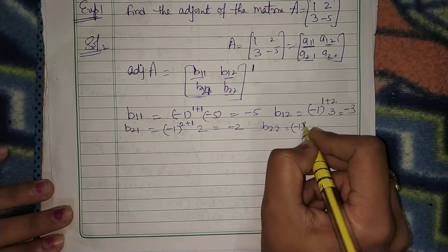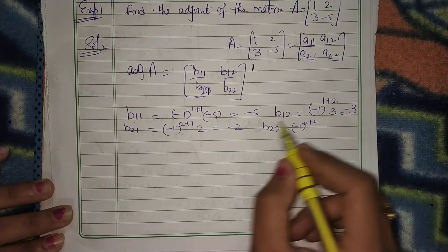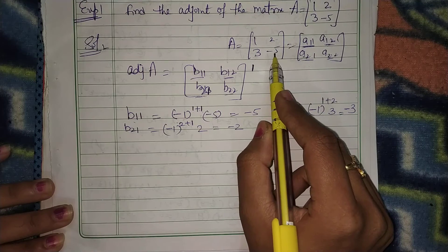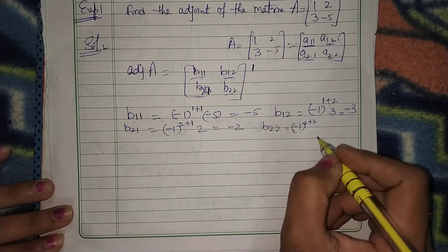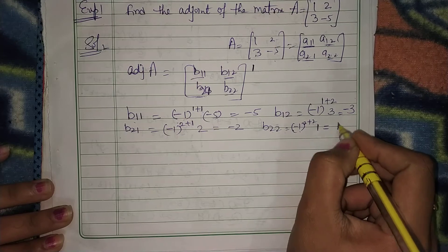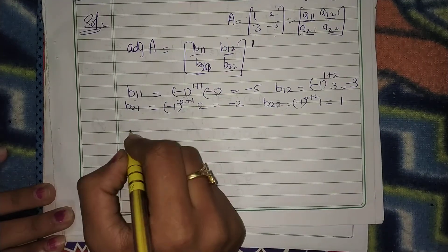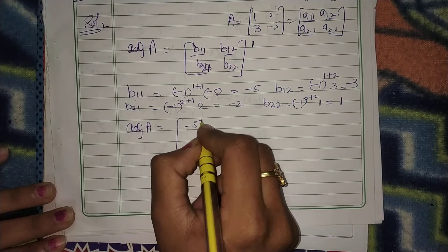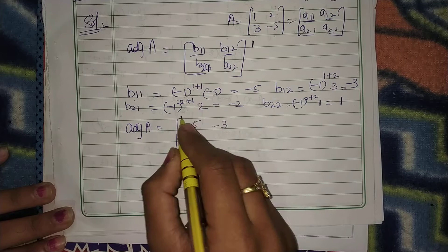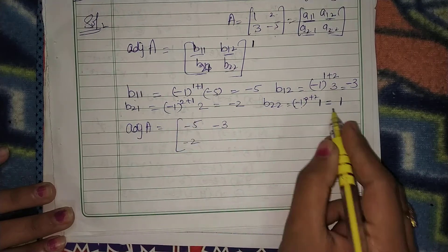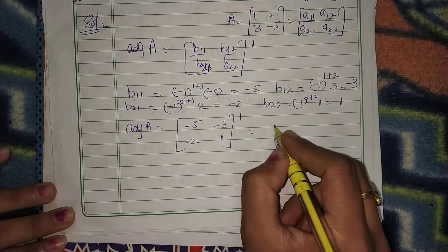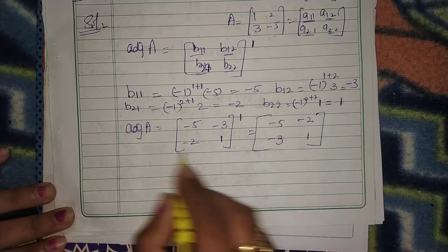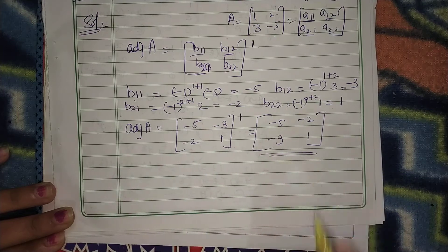B22 is (-1)^(2+2) times the cofactor of A22 — that is the cofactor of -5. The remaining element is 1, so B22 is 1. So what is adjoint of A? Putting all values: B11 is -5, B12 is -3, B21 is -2, B22 is 1. Taking the transpose of this matrix gives adjoint of A as [[-5, -2], [-3, 1]].